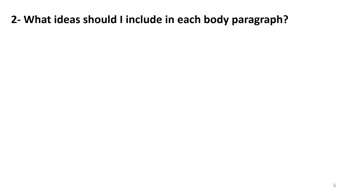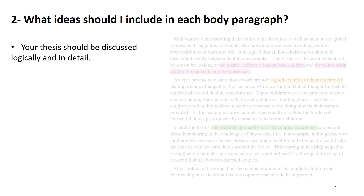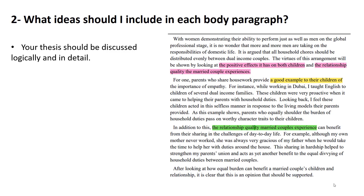What ideas should I include in each body paragraph? You should include the points you mention in the thesis statement and discuss them in detail. Let me show you how. This is an essay that supports the idea that husbands should share the household responsibilities with their wives. In the thesis statement highlighted in pink, we have 2 points. Let's read it together: 'The virtues of this arrangement will be shown by looking at the positive effects it has on both children and the relationship quality the married couple experiences.' This means point 1 is the effect on children, which must appear in body paragraph 1, and the relationship quality the married couple experiences should be in body paragraph 2.